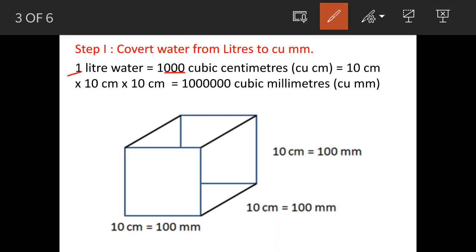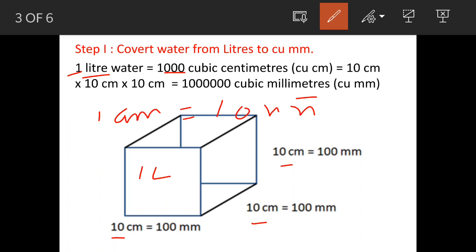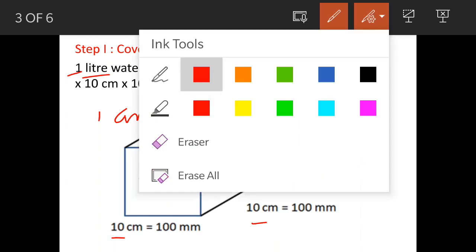One liter of water is equal to 1000 cubic centimeters — that means if you put one liter of water in a cube, it will have three sides of 10 cm × 10 cm × 10 cm. We need this one liter of water expressed in cubic millimeters, and since 1 centimeter equals 10 mm, 10 centimeters will be 100 mm.